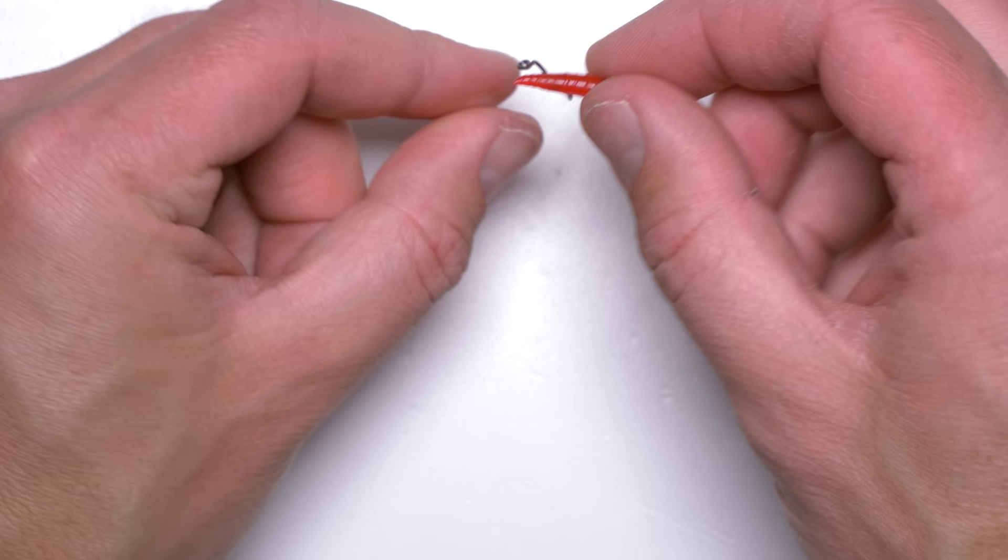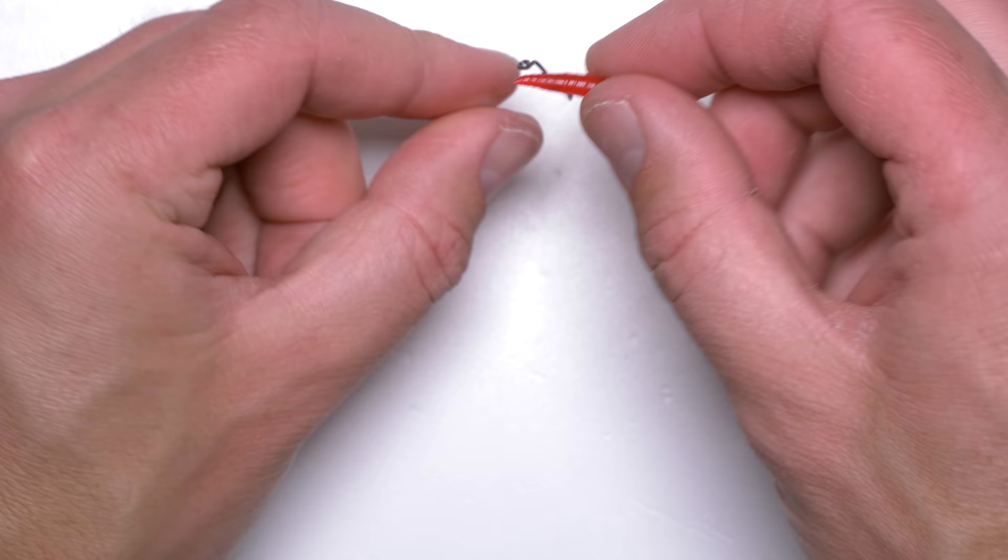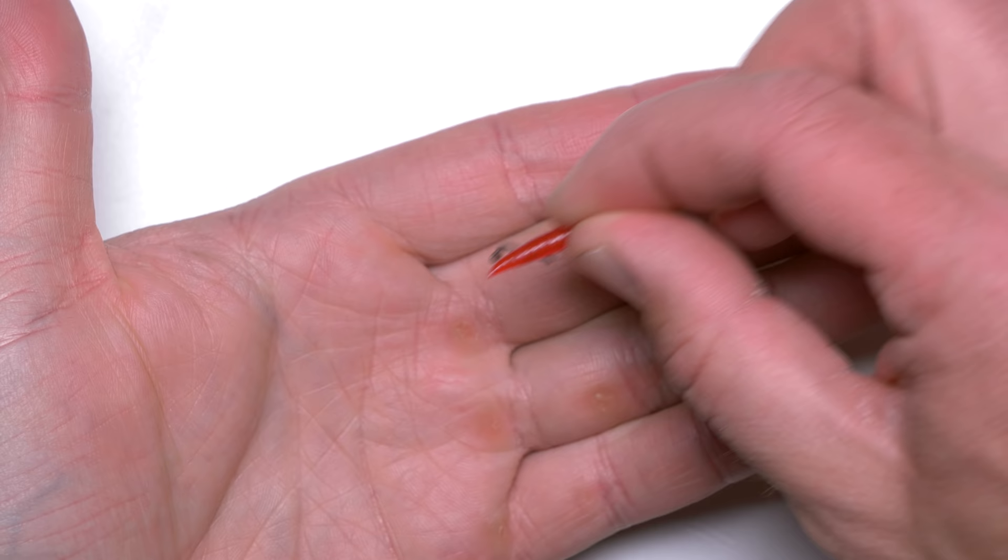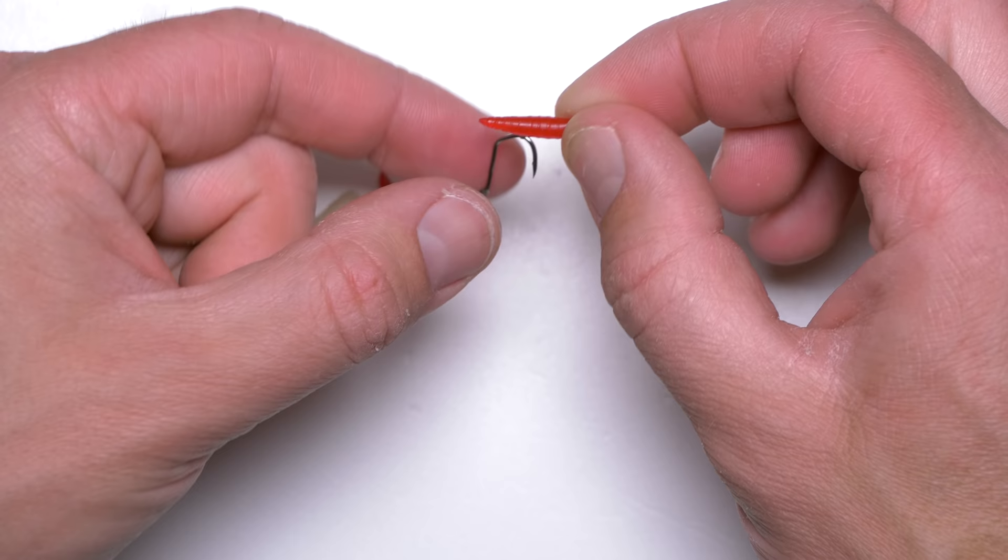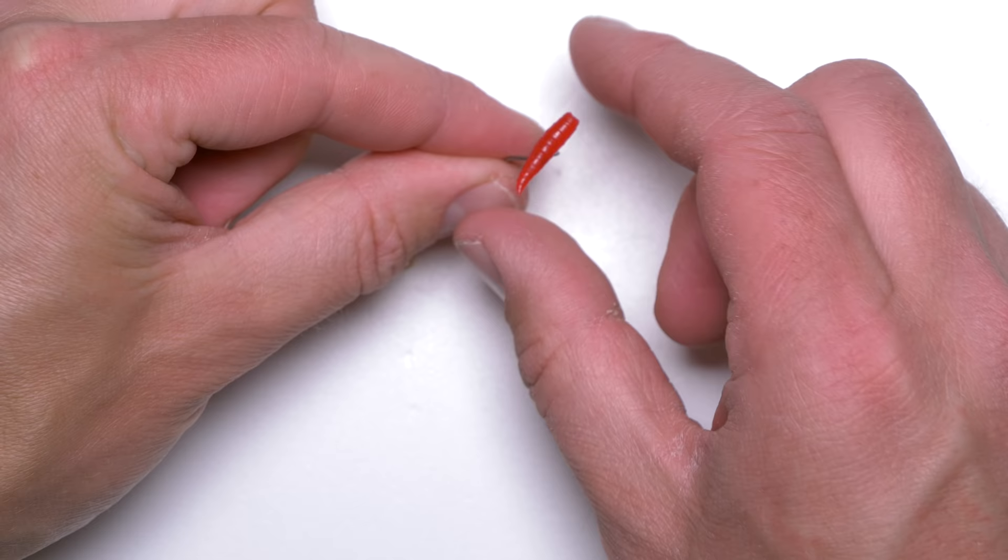So yeah, it will be more or less the same parachute effect so the maggot will be orientated like that, horizontally with the bottom or with the surface of the water and it will be sinking like that and presenting itself very well to the fish because the hook obviously is made out of metal and it will pull the maggot down. But the maggot will be stopping the fall of the rig.